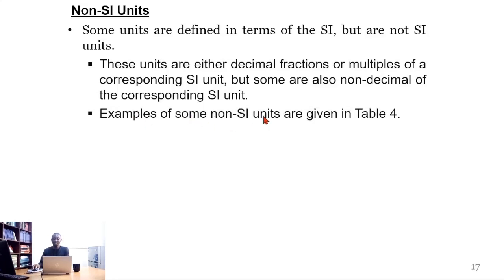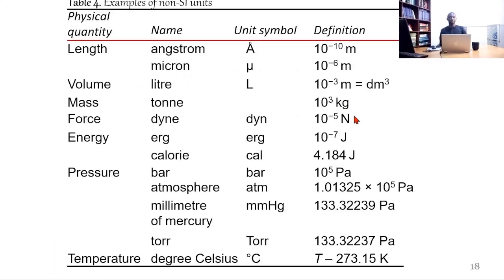Examples of some non-SI units are given in Table 4. These are physical quantities, names of the units, unit symbols, and definitions. Length: angstrom with this symbol A with a ring on top, defined as 10⁻¹⁰ meter. Length again: micron, denoted as μ, 10⁻⁶ meter. Volume: liter, unit symbol L, 10⁻³ m³, which equals dm³.